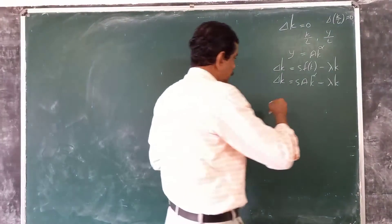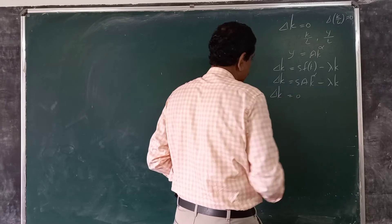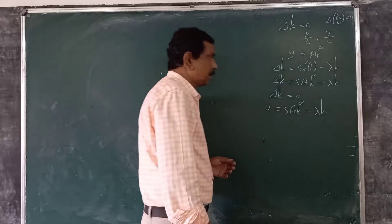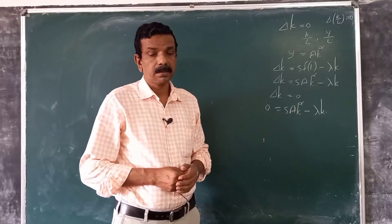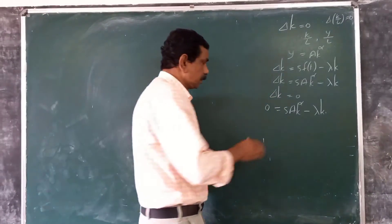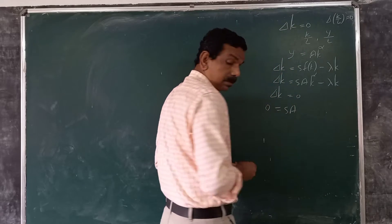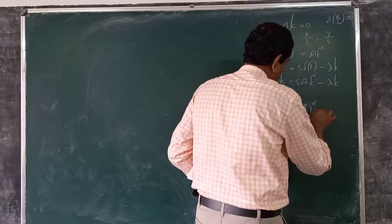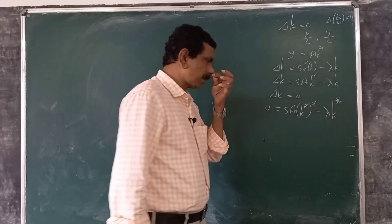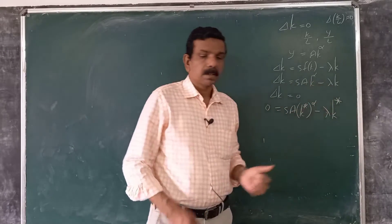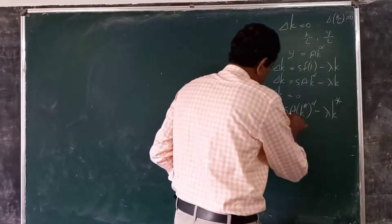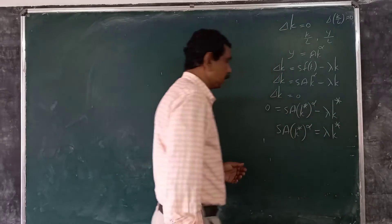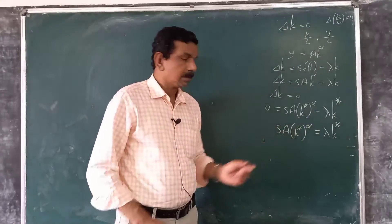In the steady state, Δk = 0, which means 0 = S·A·k^α − λk. We denote the steady state value of k/L as k*, so the steady state condition becomes S·A·k*^α − λk* = 0, which gives us S·A·k*^α = λk*.